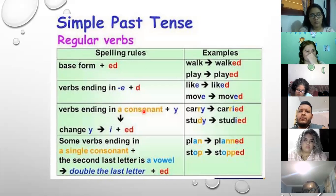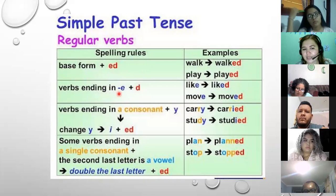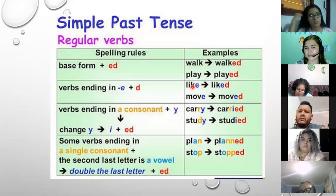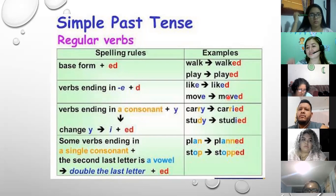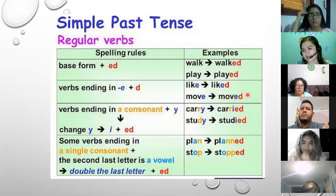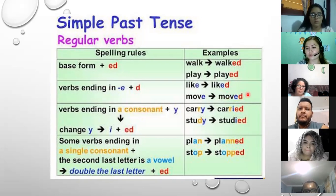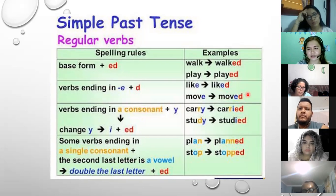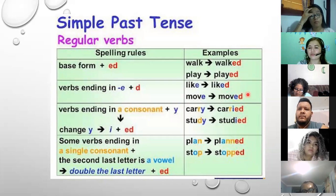If we have a verb that ends in the letter E, we are going to add just the letter D. Like the verb 'like' — you just add the letter D at the end and now the verb is in the past. Example: I move from my house last year → 'moved.' Remember that every time we are talking in the past, we need to use expressions like: yesterday, last week, last month, last year, a few minutes ago.